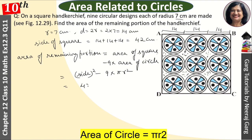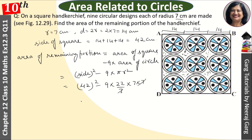The side is 42. So: 42² minus 9 × (22/7) × 7². The 7 cancels, giving 42 × 42 = 1764, minus 9 × 22 × 7 = 1386. So the answer is 1764 − 1386 = 378 cm². This is our answer.